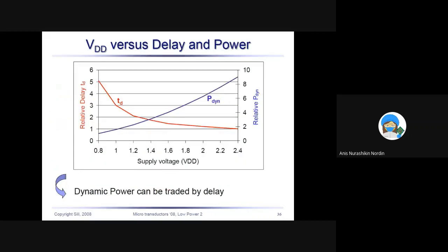Next, VDD versus delay and power. You can reduce VDD to reduce power, but you cannot have everything. There is some compromise. If you want to reduce power, you will increase delay. If you can see here, this is the dynamic power and you want to reduce the dynamic power, so you go down. Instead of having 2.4 volts, you reduce the VDD. You reduce and reduce, and let's say you reduce to one volt, but you see now that your delay is three nanoseconds.